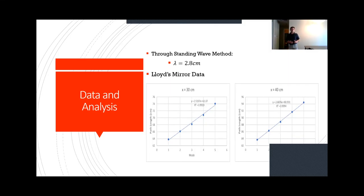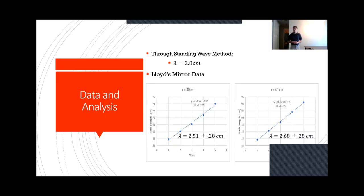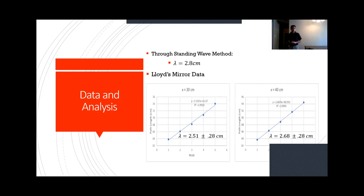Looking at the slopes and using the uncertainty formula with an uncertainty in y of 0.1 and uncertainty in x of 0.1 centimeters, we got that for x equals 30 centimeters, our lambda was equal to 2.51 plus or minus 0.28 centimeters, which doesn't include 2.8 within that uncertainty level but is very close to the upper bound. We then did the 40 centimeter trial and got lambda equal to 2.68 plus or minus 0.28 centimeters, which showed that 2.8 was within that uncertainty value.